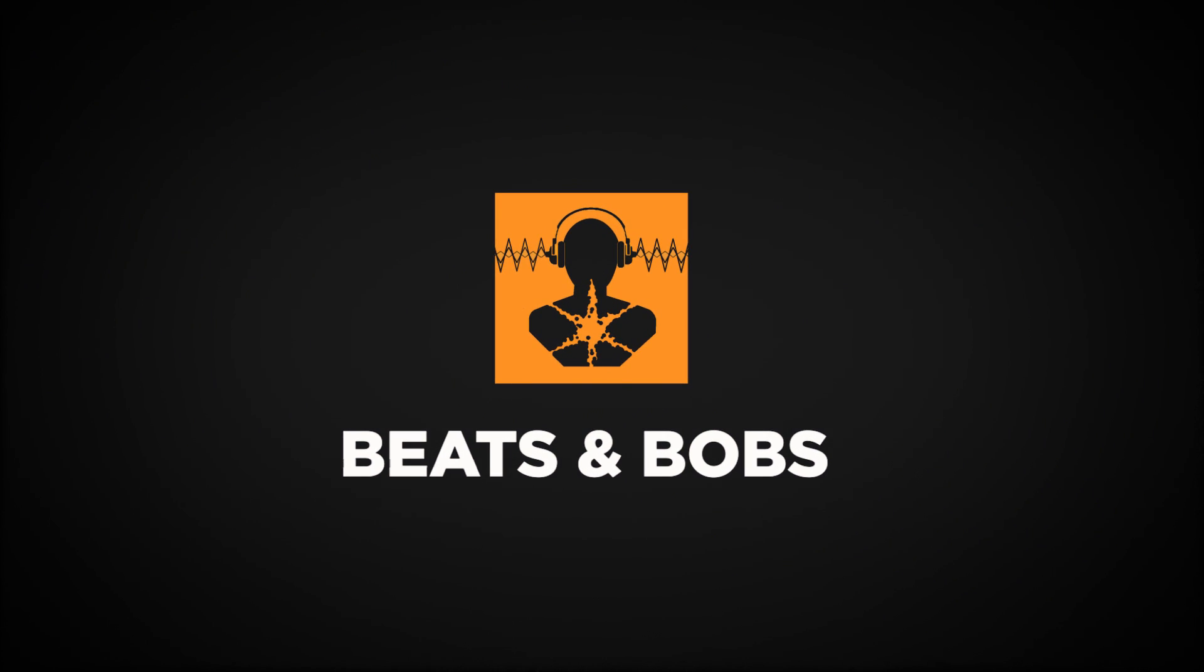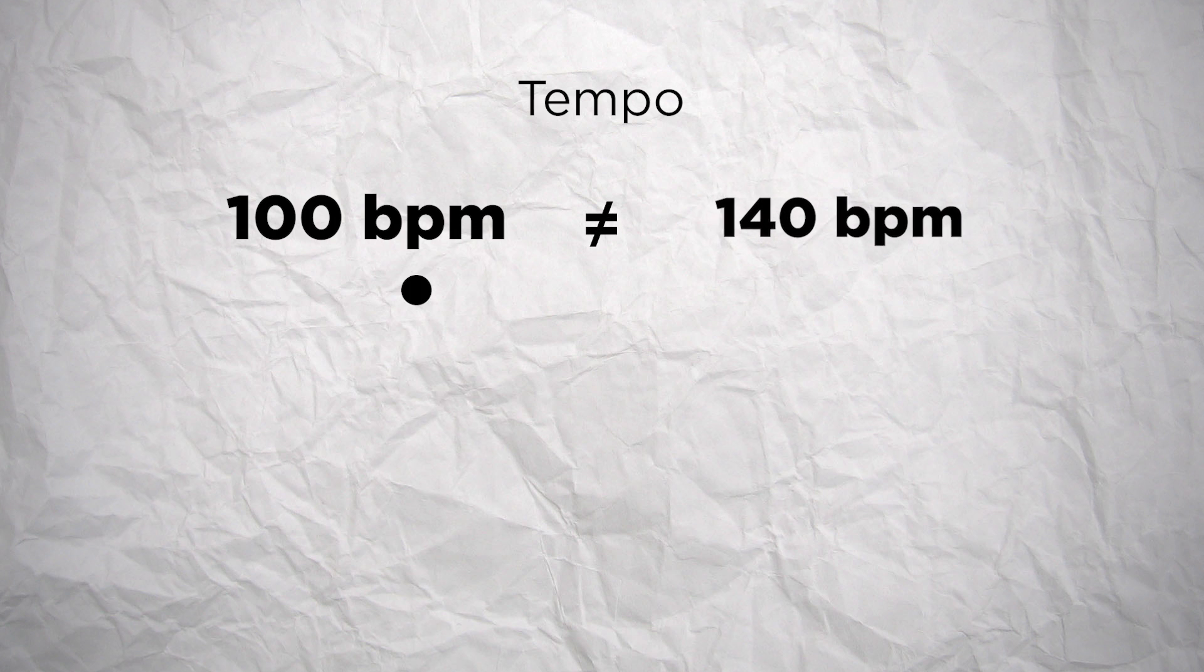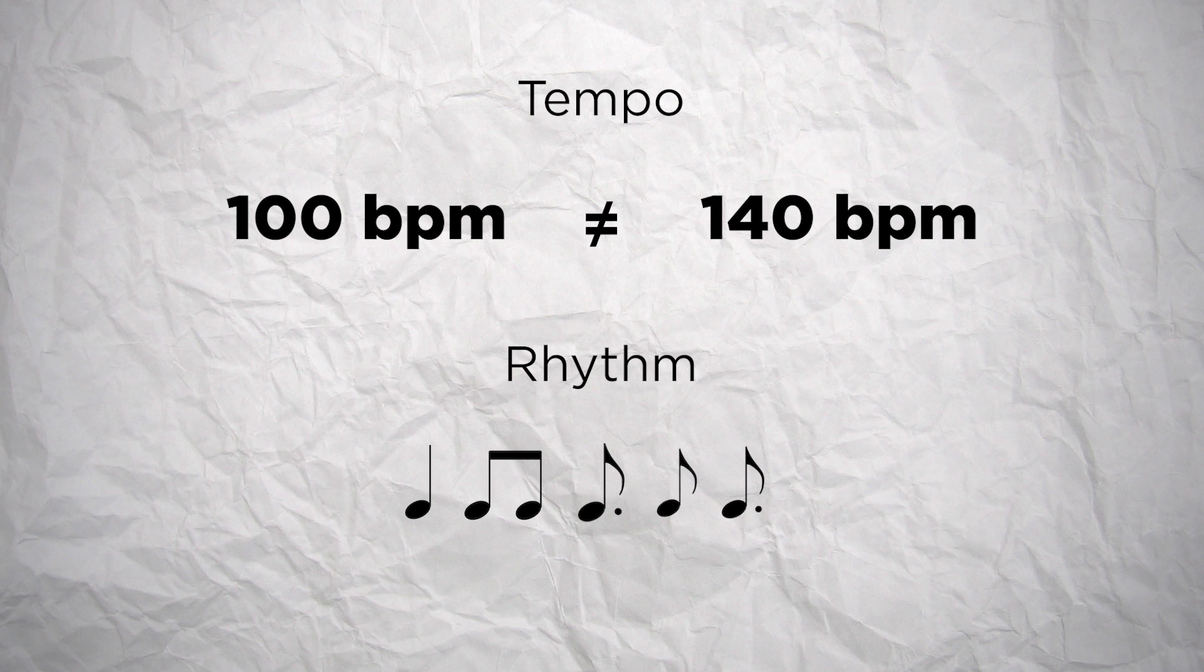If harmony is the way we organize notes in pitches, rhythm is the way we organize the note in time. And this is not to confuse with tempo, which is the global pace of music. For example, a tempo of 100 beats per minute is different than a tempo of 140 beats per minute, but a rhythm, which is the grouping of several notes, can be played at any of these tempi.